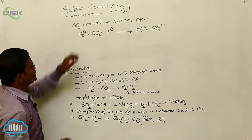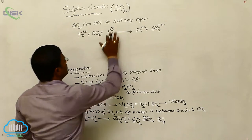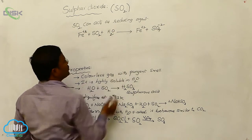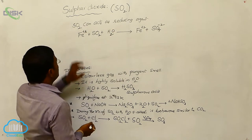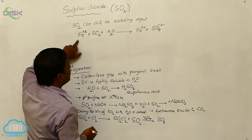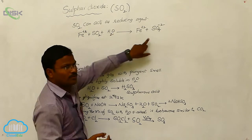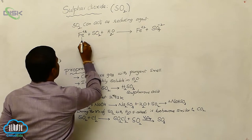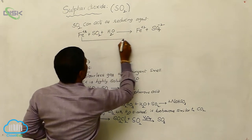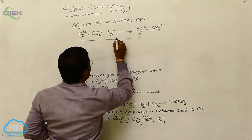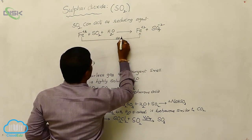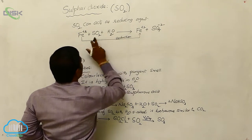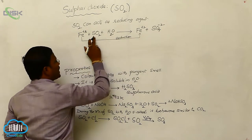Fe³⁺ ions in the presence of water (H₂O) are converted into Fe²⁺ ions — a decrease in oxidation state on iron, which is nothing but reduction. This reduction is brought about by sulfur dioxide.